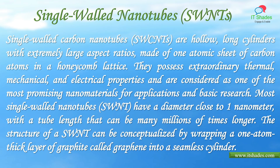Single-walled nanotubes are hollow, long cylinders with extremely large aspect ratios, made of one atomic sheet of carbon atoms in a honeycomb lattice. They possess extraordinary thermal, mechanical, and electrical properties and are considered one of the most promising nanomaterials. Most single-walled nanotubes have a diameter close to one nanometer, with a tube length many millions of times longer. Their structure can be conceptualized by wrapping a one-atom-thick layer of graphite, called graphene, into a seamless cylinder.